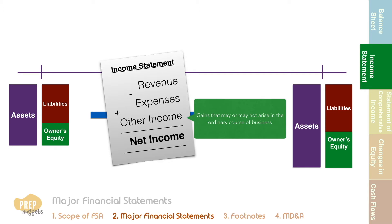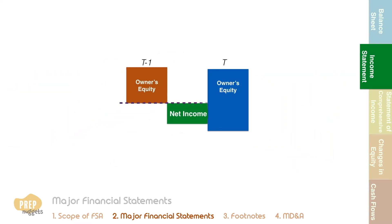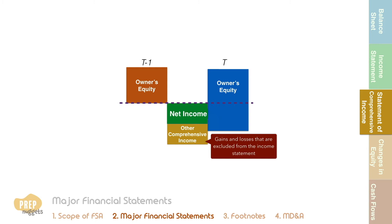The net income for the period accounts for part of the change in equity. Other comprehensive income also contributes to the change in equity — not to be confused with other income in the income statement. Other comprehensive income includes gains and losses excluded from the income statement, such as unrealized gains or losses on investments classified as available for sale, foreign currency translation gains or losses, and pension plan gains or losses.